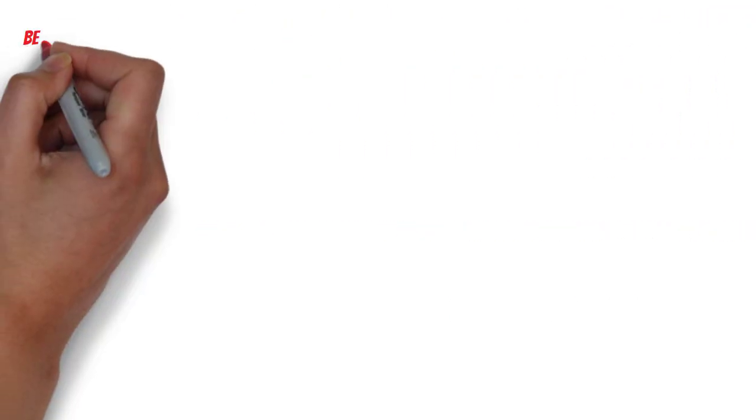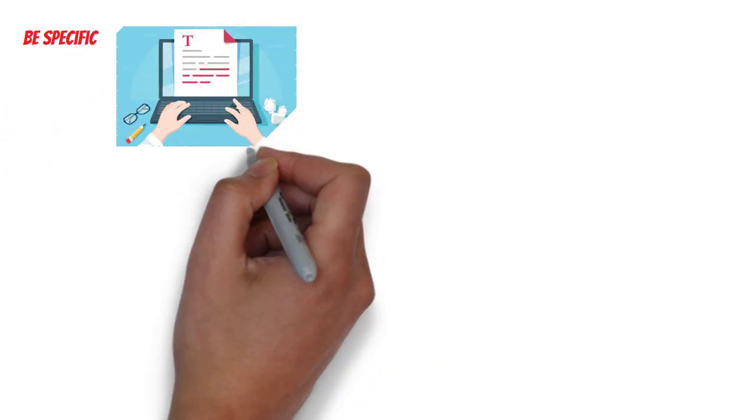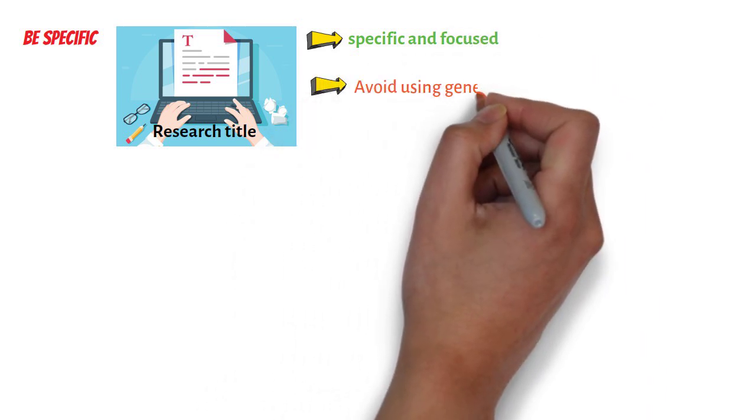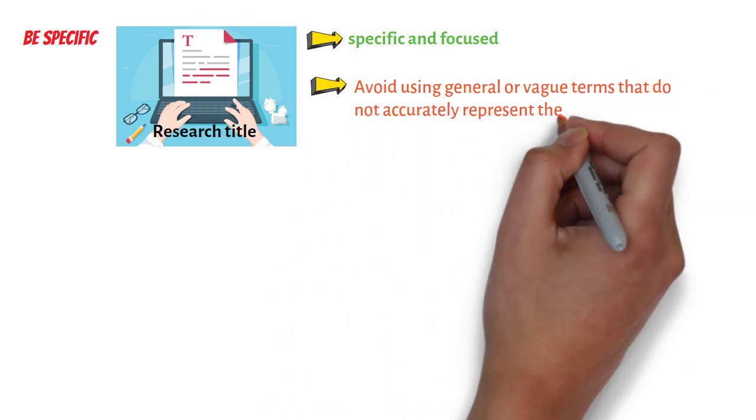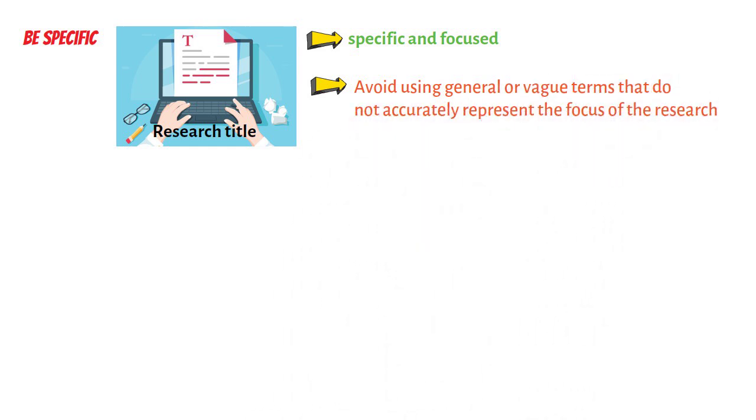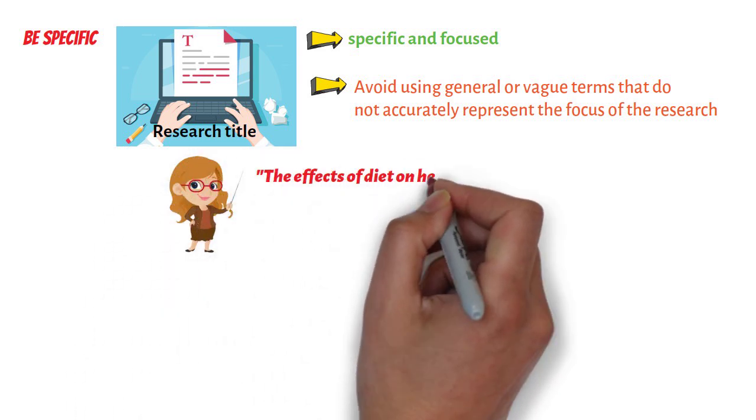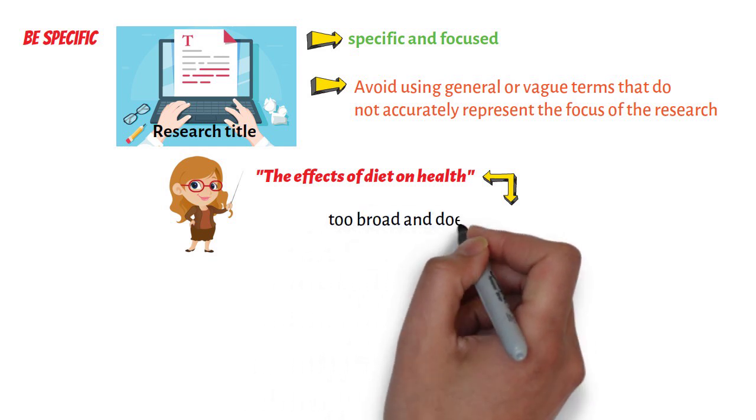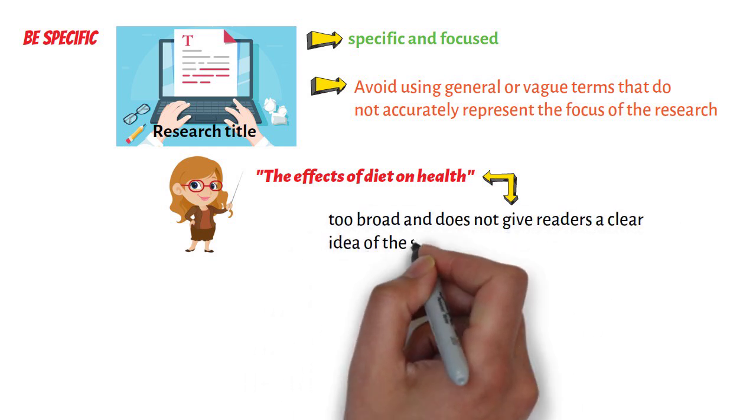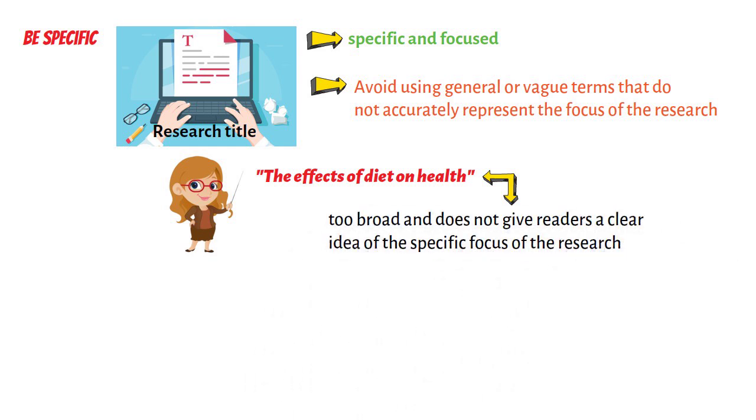Fourth, be specific. The research title should be specific and focused. Avoid using general or vague terms that do not accurately represent the focus of the research. For example, a title like 'the effects of diet on health' is too broad and does not give readers a clear idea of the specific focus of the research.